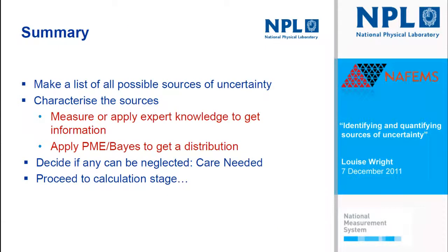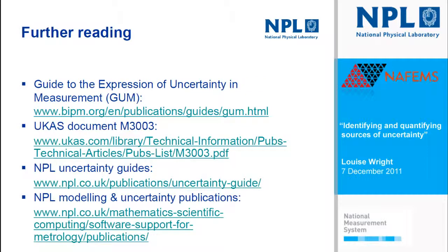To summarise, the approach is to make a list of all possible sources of uncertainty, characterise the sources by measurement or application of expert knowledge, and apply the principle of maximum entropy or Bayes' theorem to get a distribution for each source. Decide if any sources can be neglected, then proceed to the calculation stage, which Dietmar will discuss. Finally, suggested reading includes the Guide to the Expression of Uncertainty in Measurement — the uncertainty bible for measurement scientists — plus a UCAS document, and NPL's guides and modelling publications. Thanks.